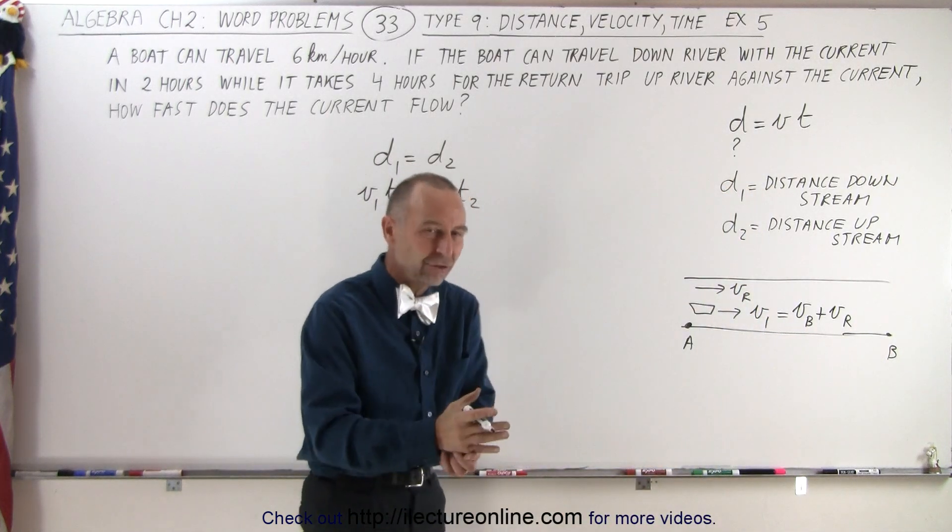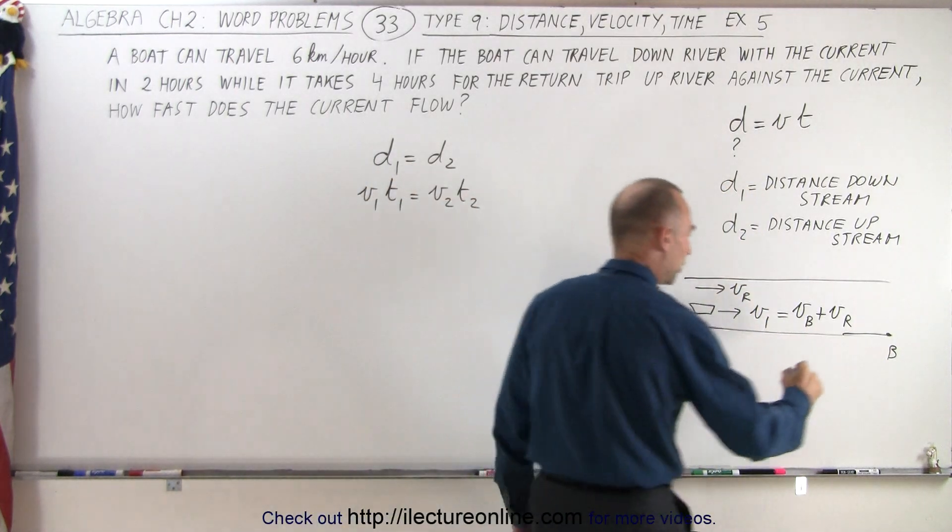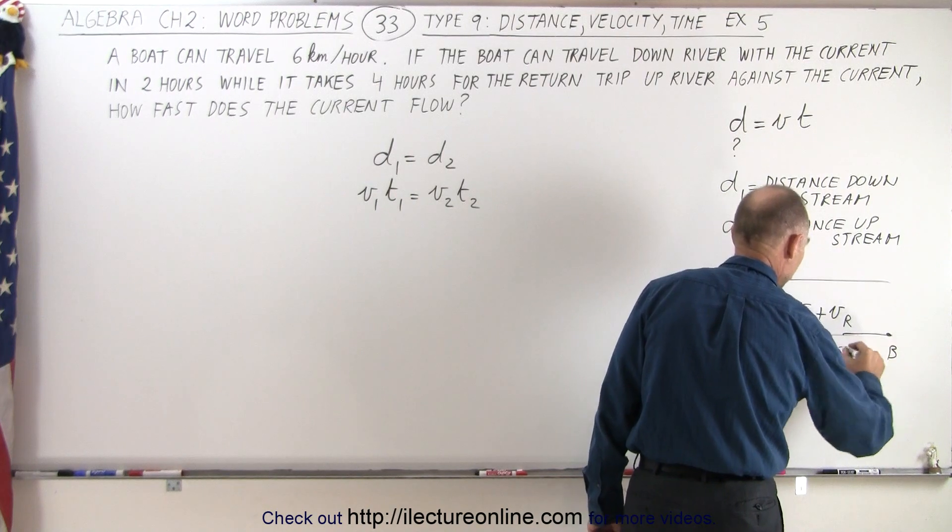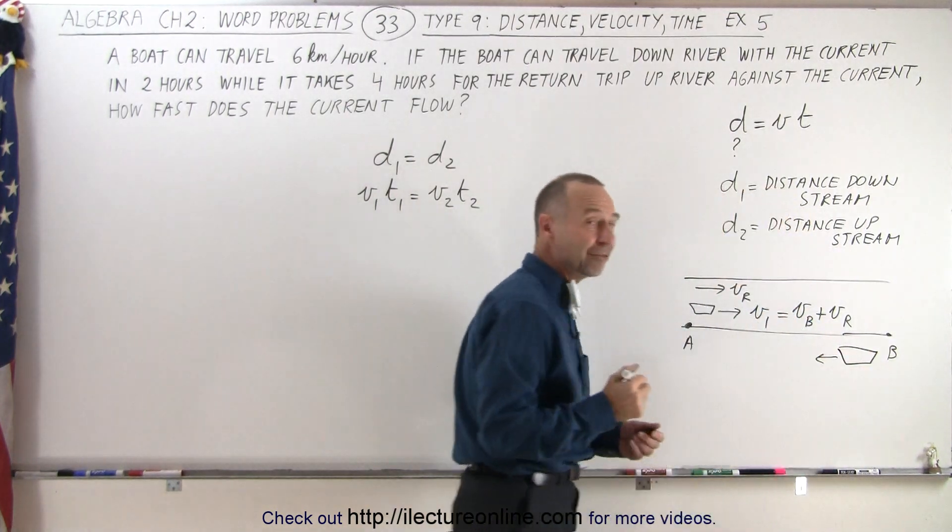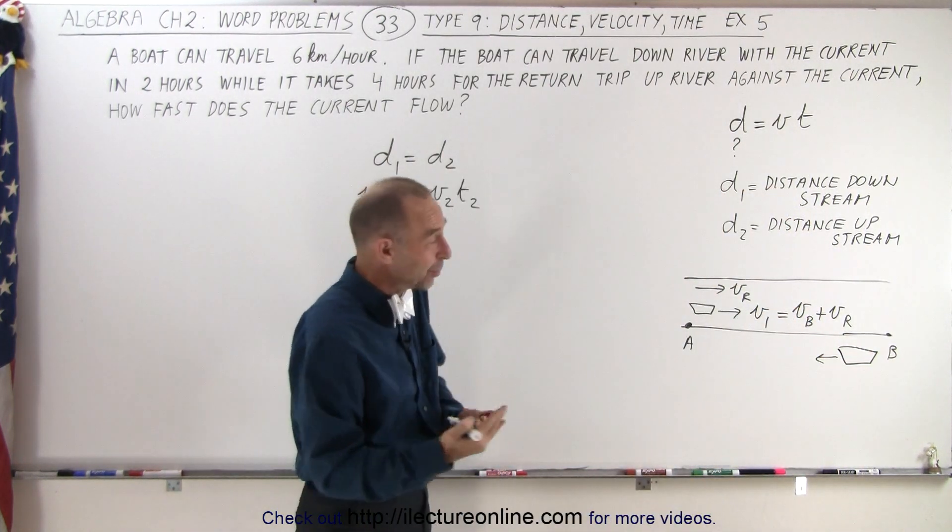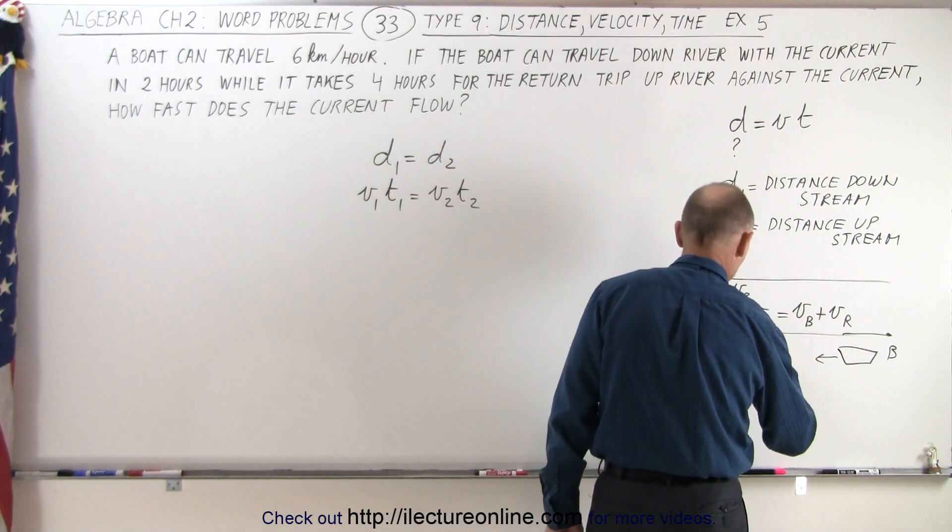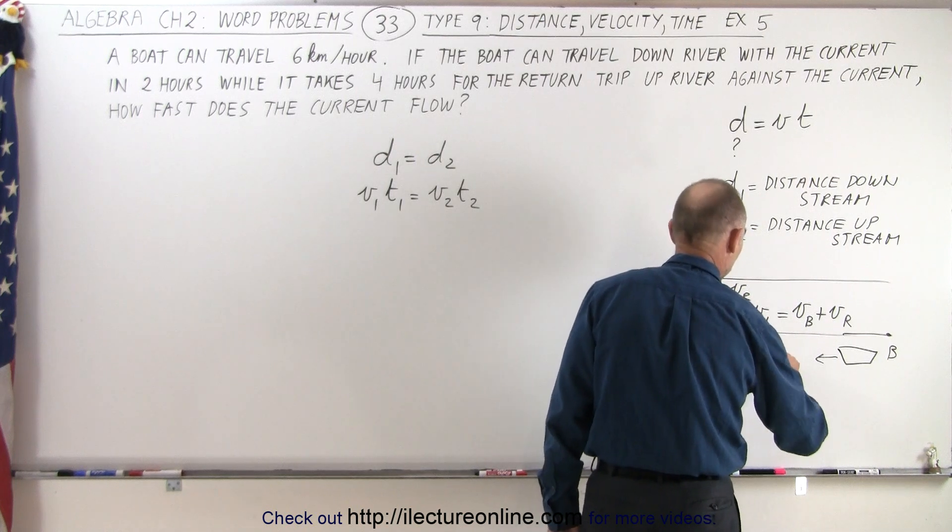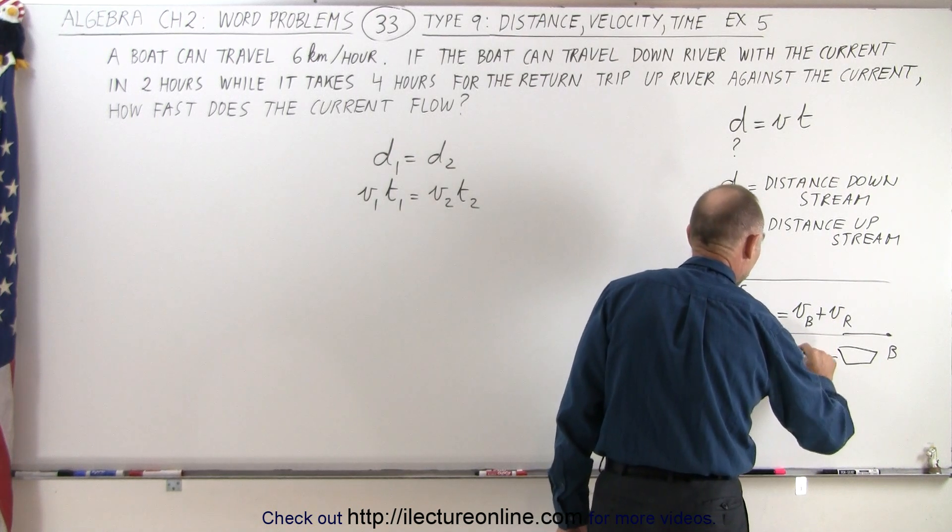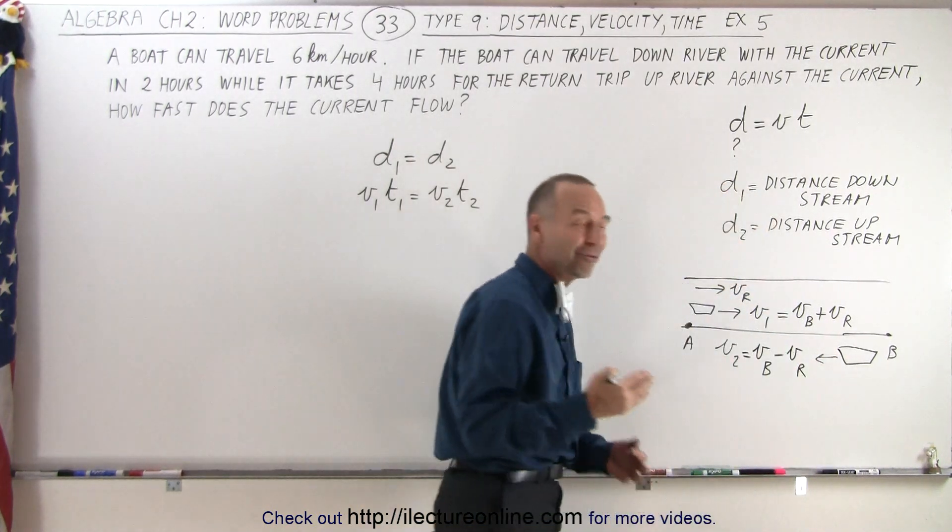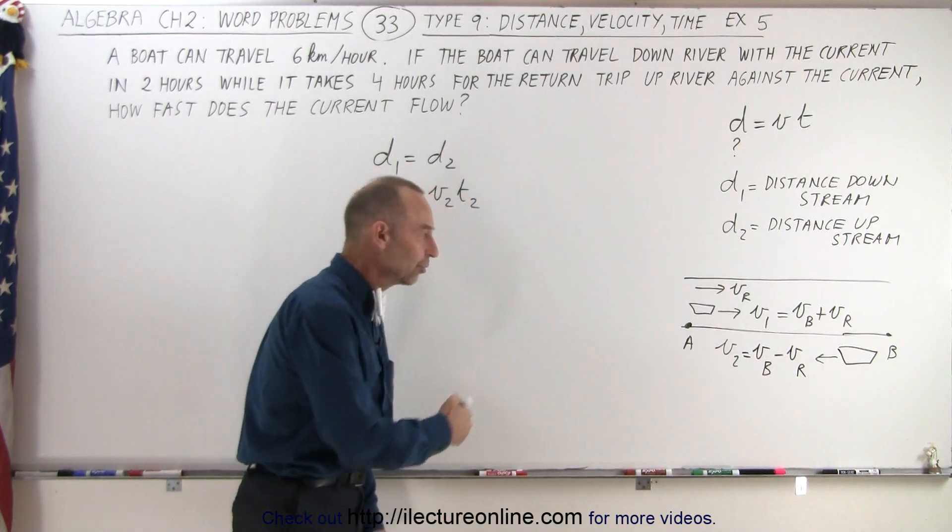It's going to be the two added together. But then when the boat travels back upstream, the boat has to fight against the current of the river. And so now the velocity, v2, is going to be equal to the velocity of the boat minus the velocity of the river, because now we're fighting the current against the river.